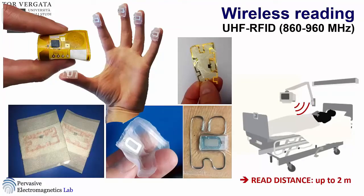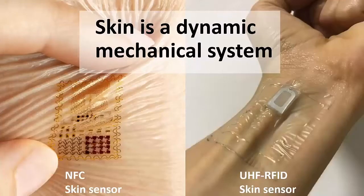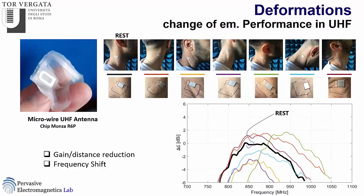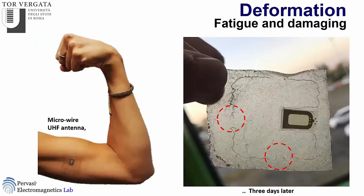In both cases, we have the same enemy: the deformation of antennas when applied over the skin. Because the skin is a dynamical system — it's not fixed. We could have very critical side effects when we move to high frequency. Consider this soft antenna attached over the neck; you can see the deformation when making gestures. Deformation at UHF frequency produces a variation of gain, a reduction of resistance, and a frequency shift. Moreover, fatigue can produce damage and breakage of the antenna during continuous cycling of human gestures.